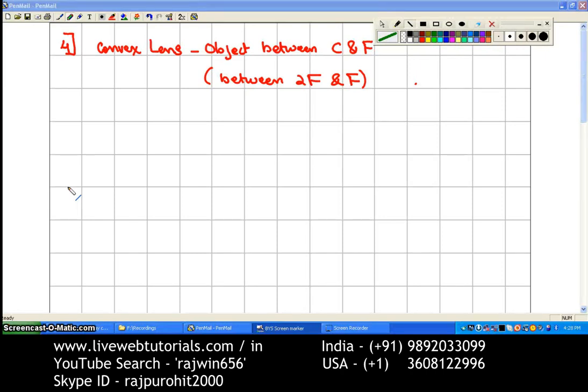Now, the fourth ray diagram for a convex lens: the object is between C and F—that's center of curvature and focus—or between 2F and F.